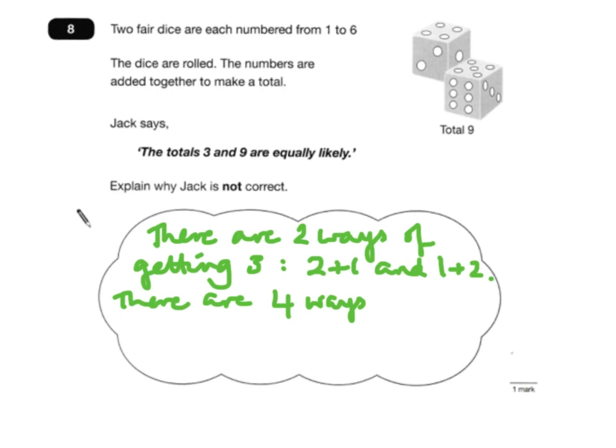But there are four ways of getting a nine. You can get four on one dice and five on the other, or five on one dice and four on the other. You can get three on one dice and six on the other,